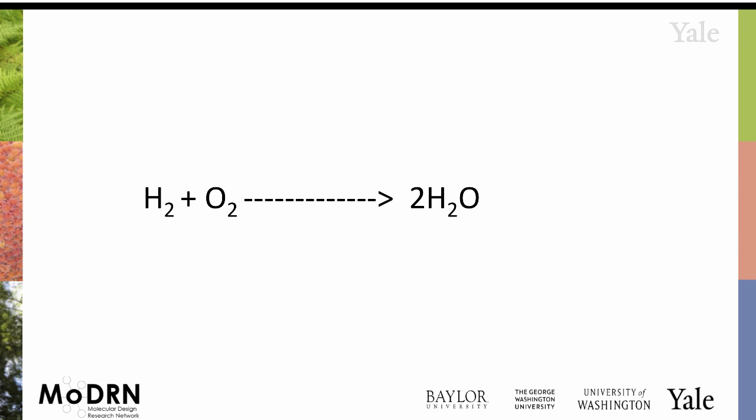So one way to do that is to say, well, we'll make two water molecules. But now if we go back and check the hydrogen, there's only two on this side, four on this side, so we need to come back and balance the hydrogen again.